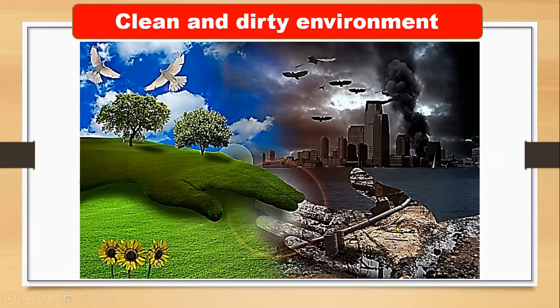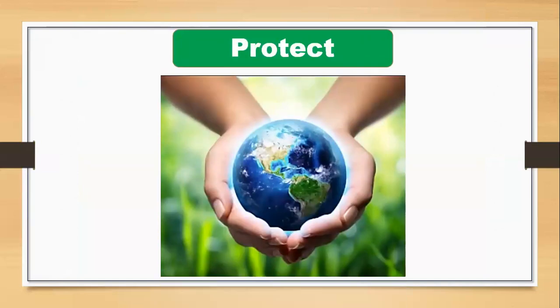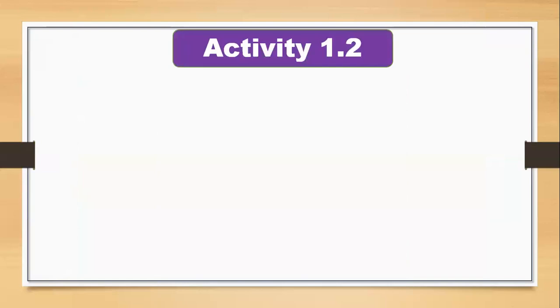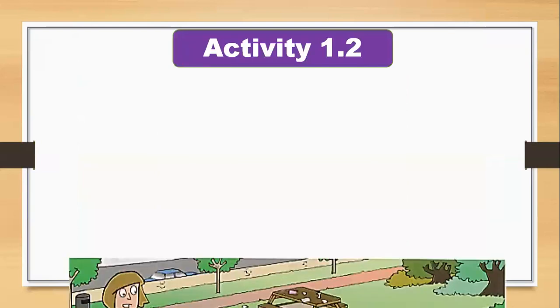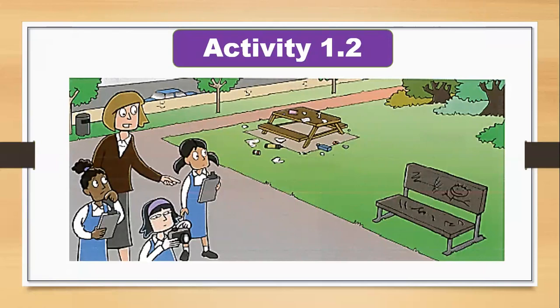Here are two cities and this city is dirty because people are not caring for the environment. Now how do we protect our environment? Look at Activity 1.2 on your learners book. You can go outside and look around at your environment.